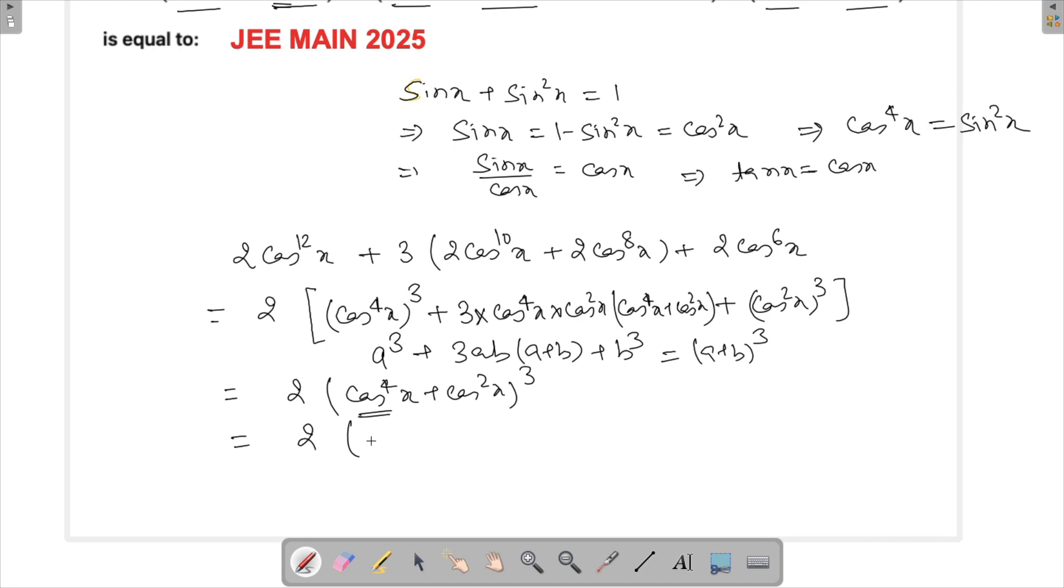If we can say this, then we know what is going to happen here. So this 2 cos raised to the power 4x will become sin square x, and this will become cos square x, and we know that sin square x plus cos square x is 1. So 2 into 1 cube, and that will be actually equal to 2.